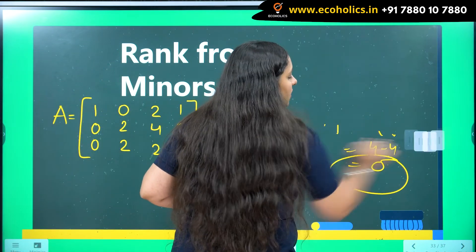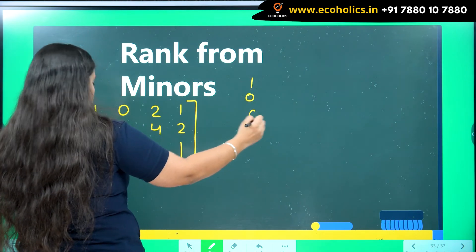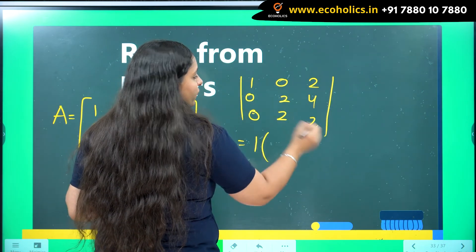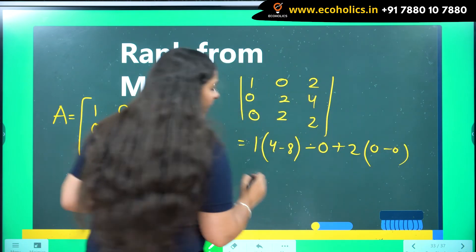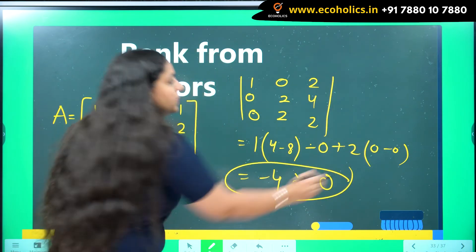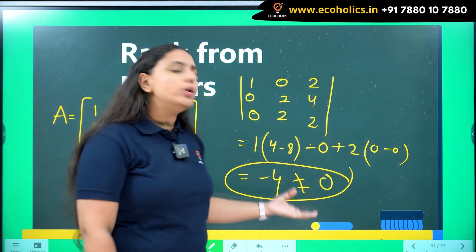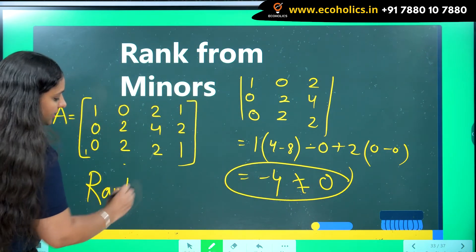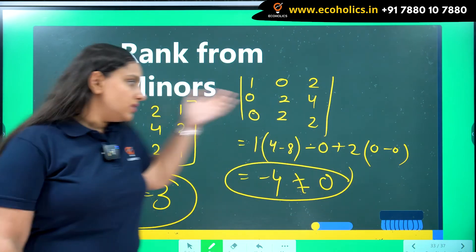Next, I take the first three columns and leave the last column — elements 1, 0, 0; 0, 2, 2; 2, 4, 2. The determinant is: 1(4−8) − 0 + 0 = −4, which is not zero. So I have found a 3×3 minor whose determinant is not zero, and I don't need to go to 2×2 or 1×1. Therefore, the rank of this matrix is equal to 3.